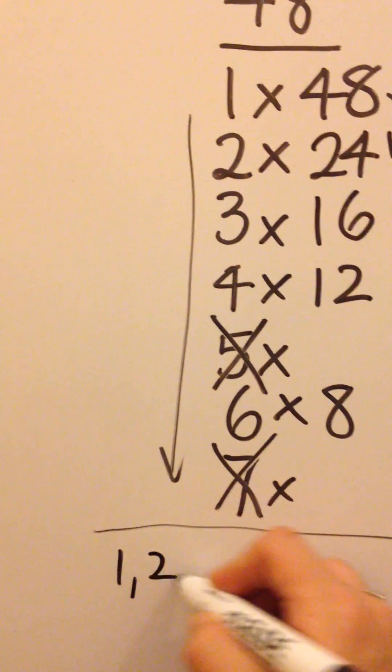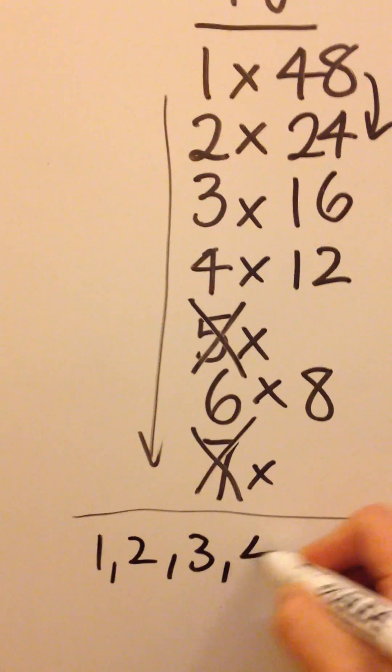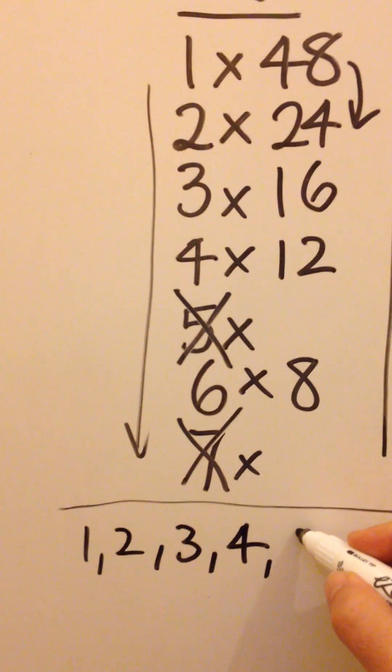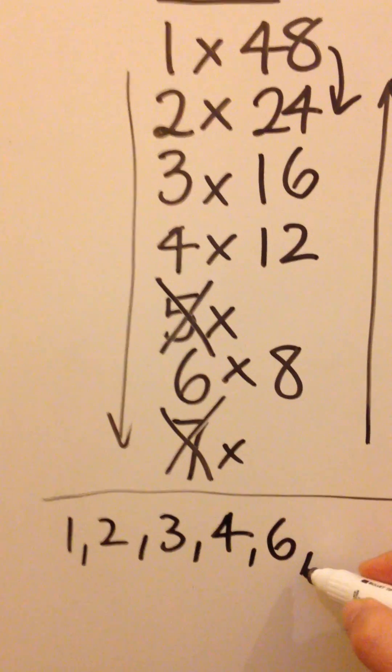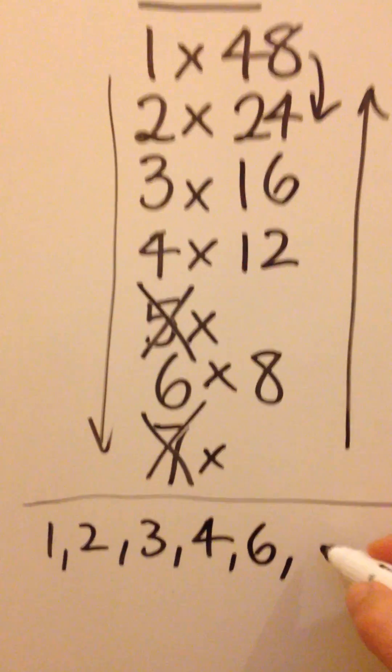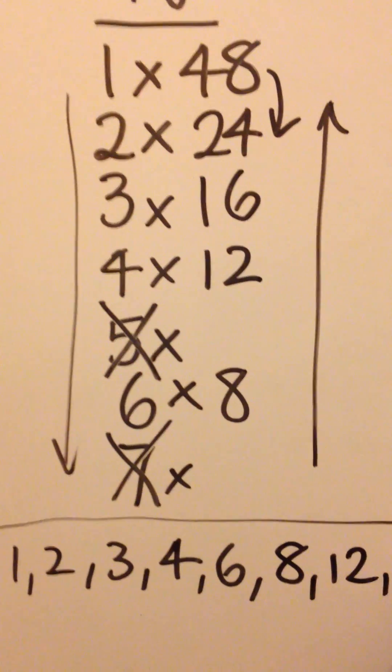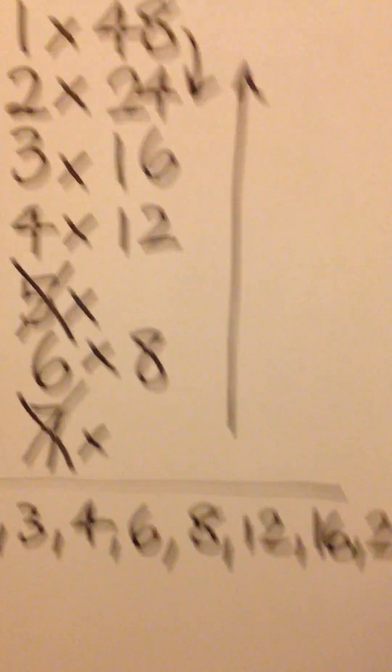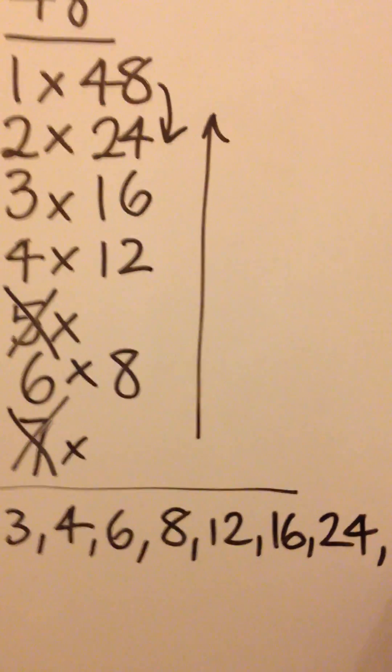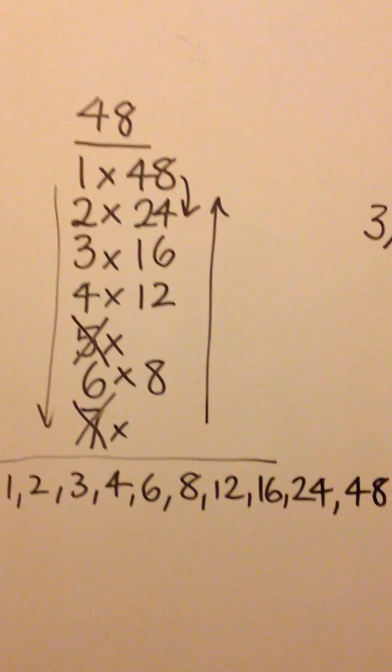So we have 1, 2, 3, 4, not 5, straight on to 6, miss out 7, go up the right-hand side, you have 8, 12, 16, 24, and 48. And those are all of your factors of 48.